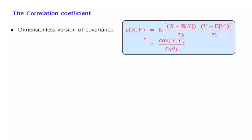One remark: if we're dealing with a random variable whose standard deviation is equal to 0 — so its variance is also equal to 0 — then we have a random variable which is identically equal to a constant. For such degenerate random variables, the correlation coefficient is not defined, because it would involve a division by 0.